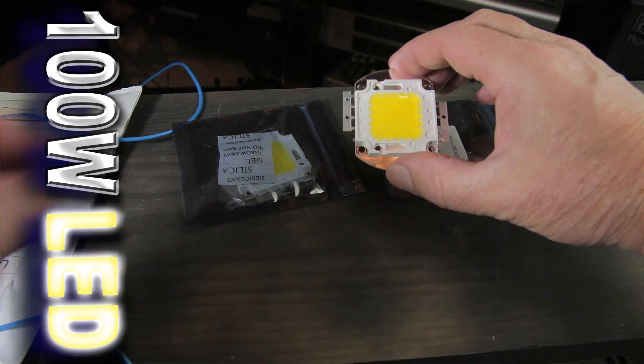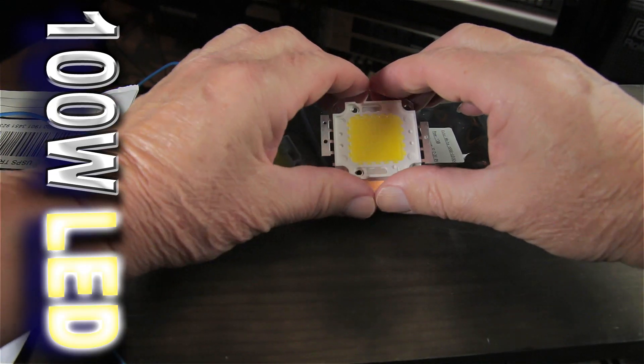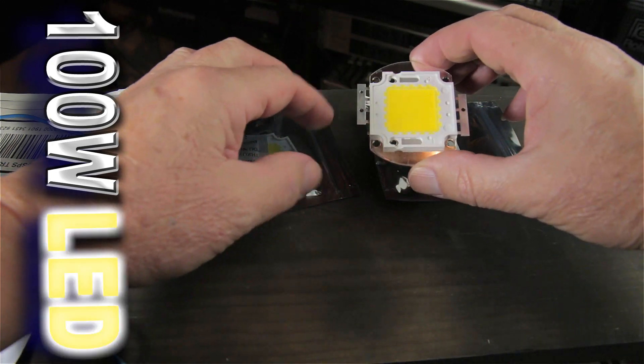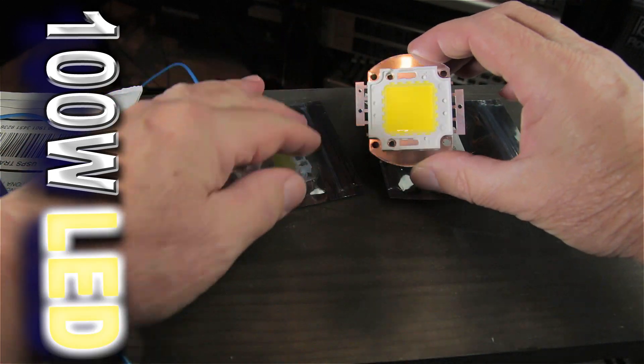I need to determine which contact is plus and which one is minus since it doesn't have any marks here.